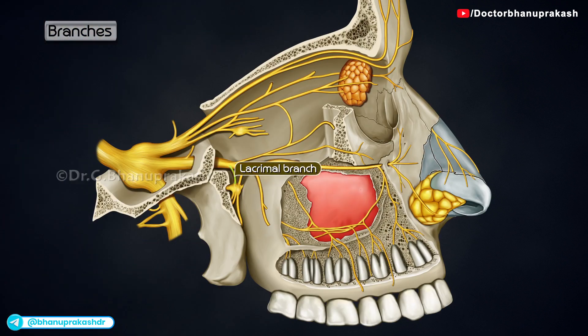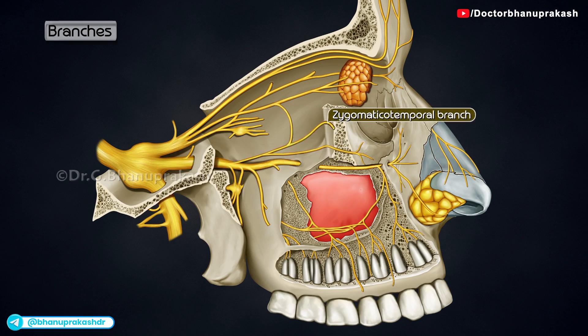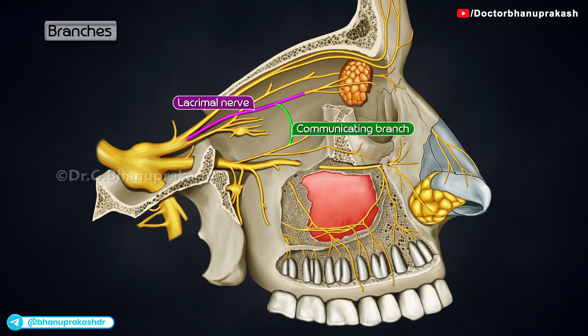The lacrimal branch: The postganglionic fibers pass back into the maxillary nerve to leave it through the zygomatic nerve and its zygomaticotemporal branch, via a communicating branch to the lacrimal nerve, to supply the secretomotor fibers to the lacrimal gland.